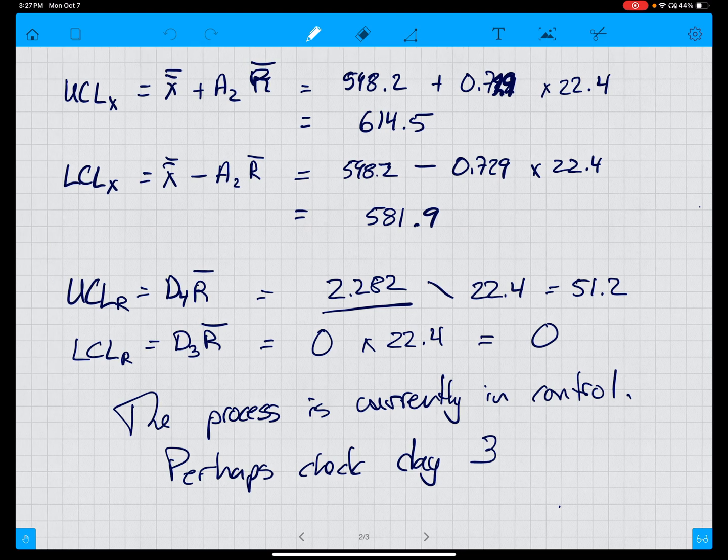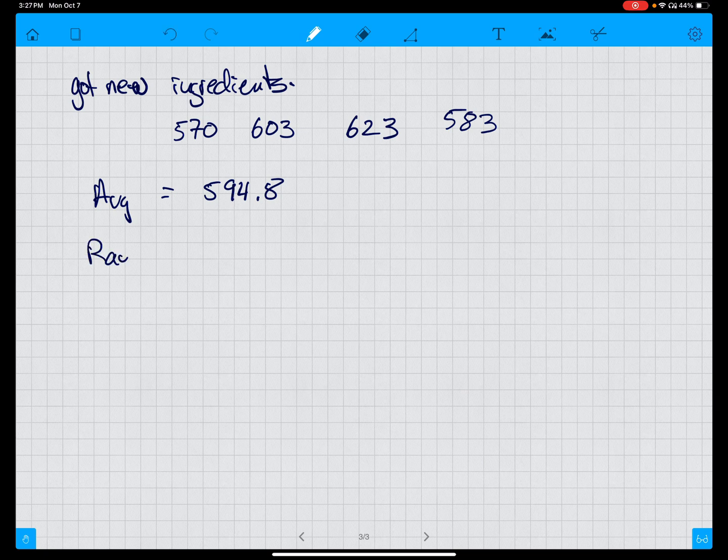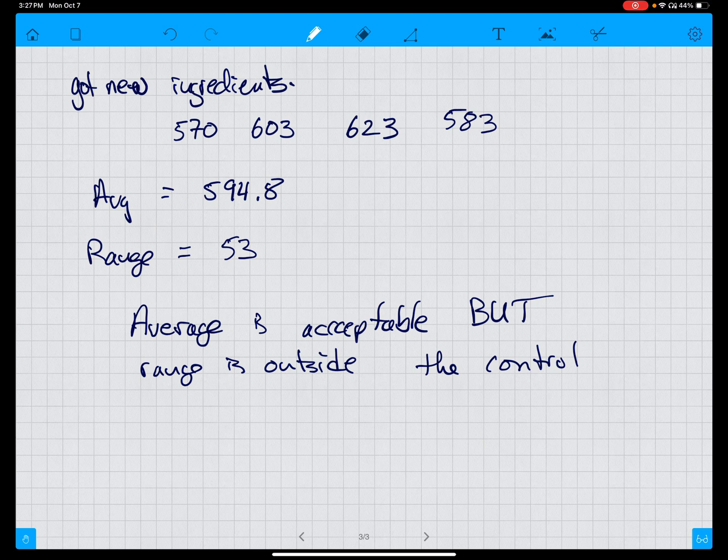The average equals 594.8, well within the ranges we had established. A bit low, but well within the ranges. The range equals 53, which is the difference between 623 and 570. We can conclude the average is acceptable, but range is outside the control limits. We need both of them to be in control, so process is not in control. The process has gotten more variable.